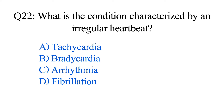Question number twenty-two. What is the condition characterized by an irregular heartbeat? Option A: Tachycardia. B: Ventricular tachycardia. C: Arrhythmia. D: Fibrillation. The correct option is Option C: Arrhythmia.